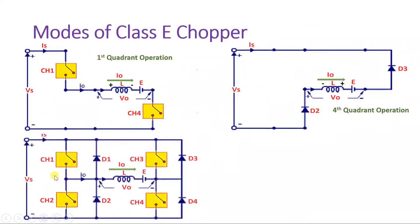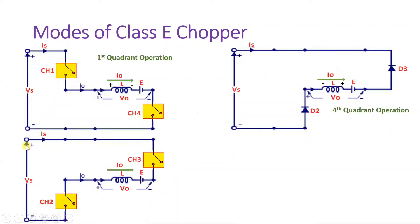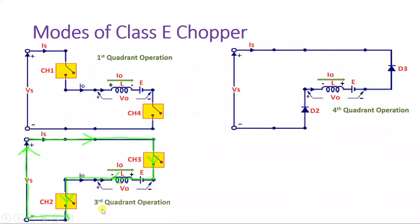In Mode 3, when Switch 2 and Switch 3 are turned on simultaneously, current flows from VS through Switch 3, through E, through the inductor L, and through Switch 2. The inductor charges with plus and minus polarity as shown. The direction of current here is opposite to the reference direction, so output current is negative. The supply voltage VS appears such that output voltage is also negative. With both output voltage and output current negative, this chopper functions in the third quadrant.